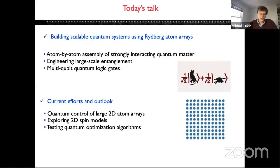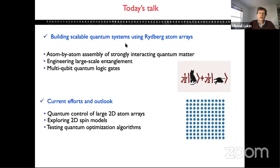I will introduce the system and tell you how we can build arrays of controlled qubits based on individually trapped neutral atoms. I will show how we can use this system to perform multi-qubit logic operations, engineer large-scale entanglement, and in the last ten minutes or so, tell you about scaling this system to much larger arrays in two dimensions, employing it for studying many-body physics and testing quantum optimization algorithms.